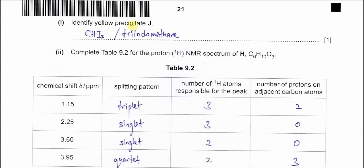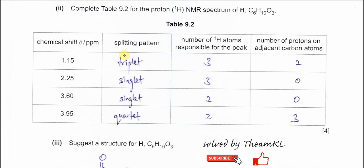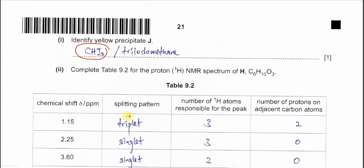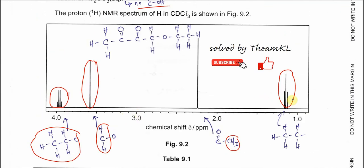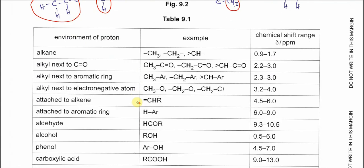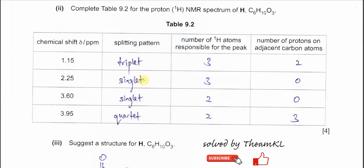Part 1: identify yellow precipitate J. The alkaline iodine test that produces a yellow precipitate gives triiodomethane, CHI₃. For the NMR table, filling in the splitting patterns in order of increasing chemical shift: the first peak is a triplet, then a singlet, then a singlet, then a quartet.